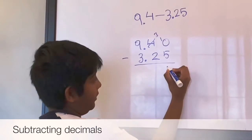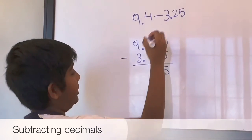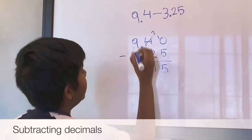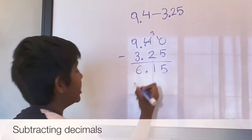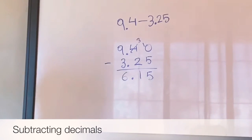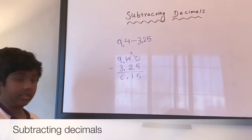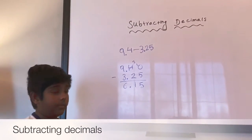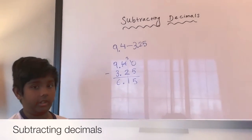Ten minus five is five, and then three minus two is one, and nine minus three is six. So 6.15 is the answer. The next one is going to be a little harder.